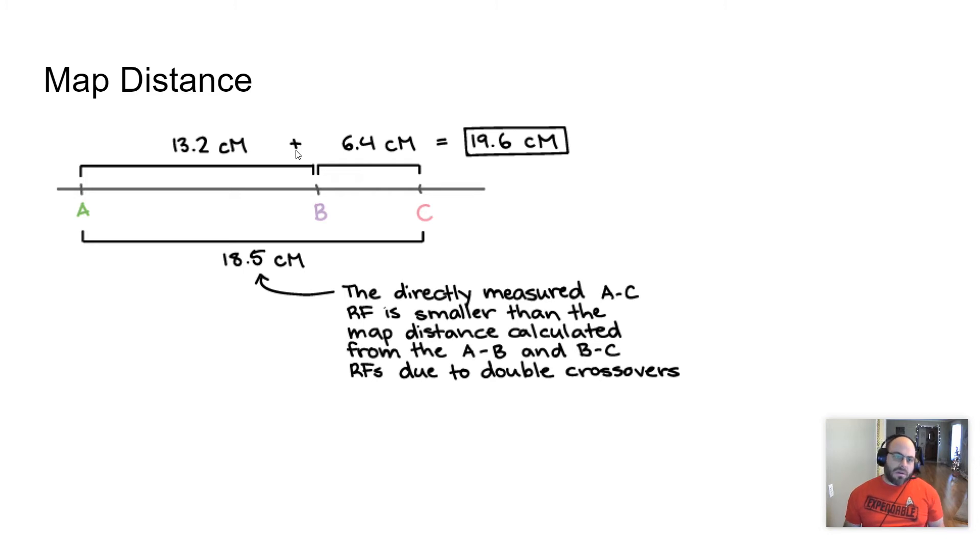And the kinds of questions that you're going to see on this will be just a general kind of understanding. The question might be, which one is more likely to cross over? Obviously, it'll be a lot more wordy than that. But you're going to look and see B and C are a lot closer together. Therefore, they're a lot less likely to cross over between B and C than there is between A and B or A and C. And so when we're talking about map distance, that's what we're talking about.